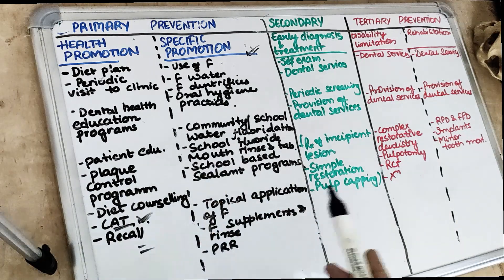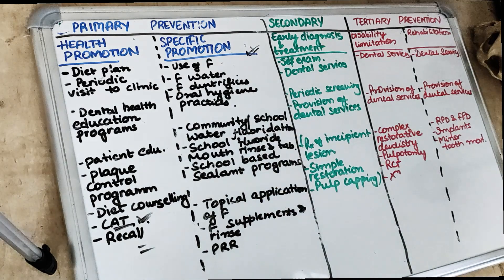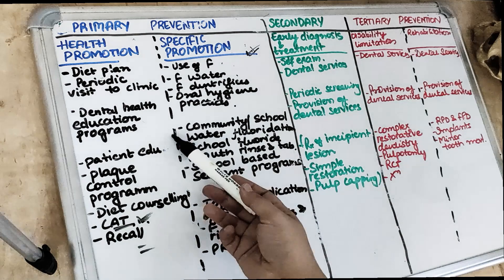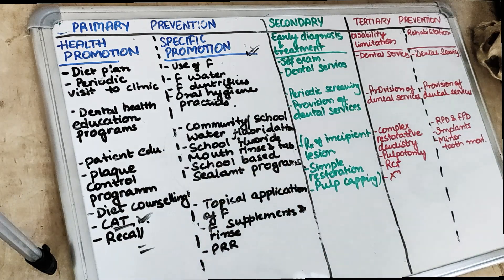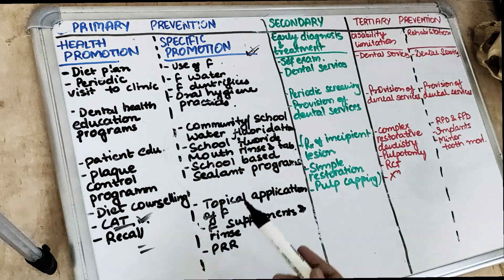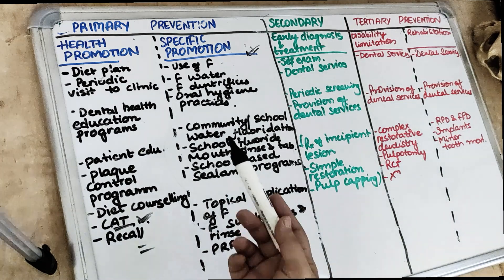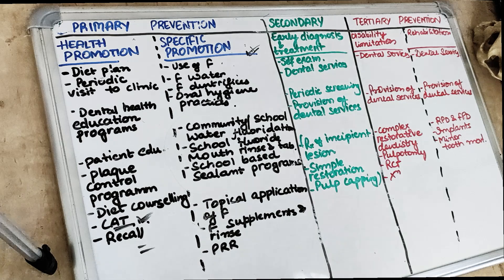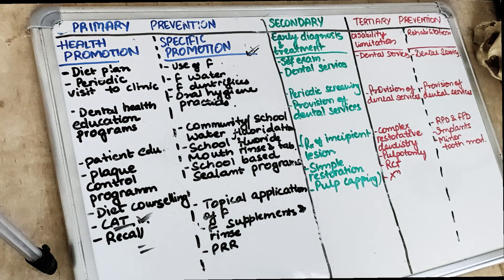At the community level, what can we do to prevent caries? Specific promotion can include putting fluoride in the school water, putting fluoride in the community water, or giving a school-based sealant program. These include community or school water fluoridation, school fluoride mouth rinses and tablets, and the school-based sealant program.